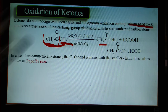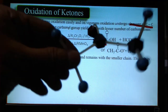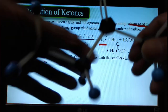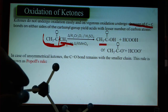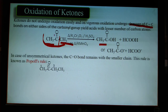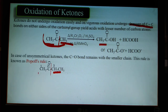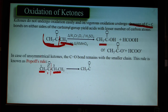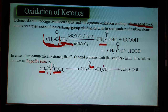Acetone is a symmetrical ketone — both groups around the carbonyl are the same. For unsymmetrical ketones like butanone (a four-carbon system), cleavage is governed by Popoff's rule: cleavage takes place on the side where the carbonyl group has the smaller alkyl group. In butanone, one group is ethyl and one is methyl; methyl is smaller, so cleavage occurs there, giving two fragments — acetyl and ethyl — which on oxidation both yield acetic acid.